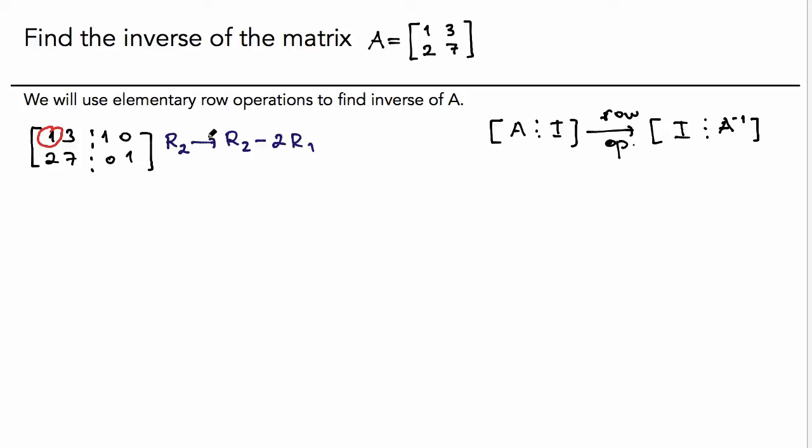What does this mean? This means we will change the second row by using a row operation. And what's that row operation? The row operation is subtracting two times the first row from the second row. So what do we get here? From this row operation, the first row will not be affected. It's going to be the same. The one that will change is the second row.